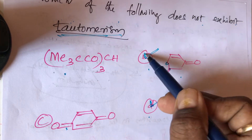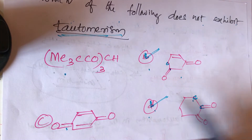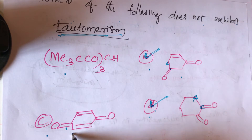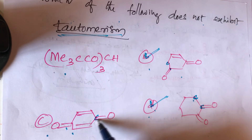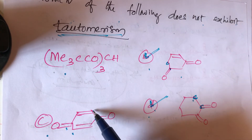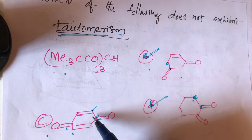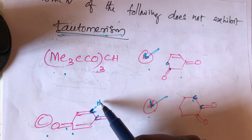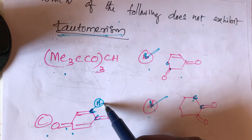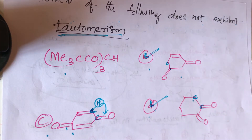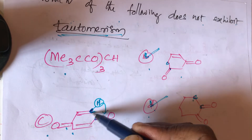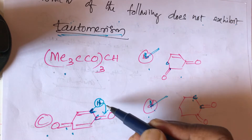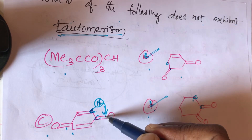So compounds B and D are also participating. What about compound C? Compound C does not participate in tautomerism. Why? Because there is no valid alpha hydrogen — the alpha hydrogen present is on a double-bonded carbon, and hydrogen on a double-bonded carbon does not participate in tautomerism.